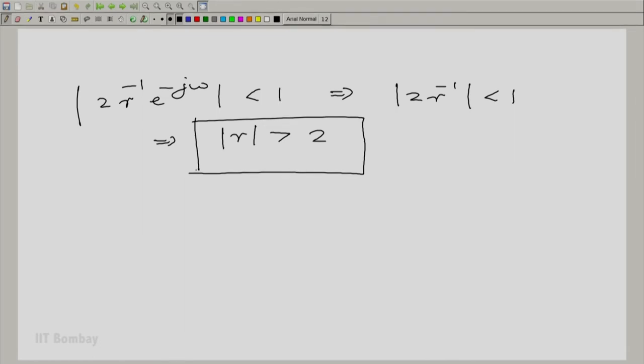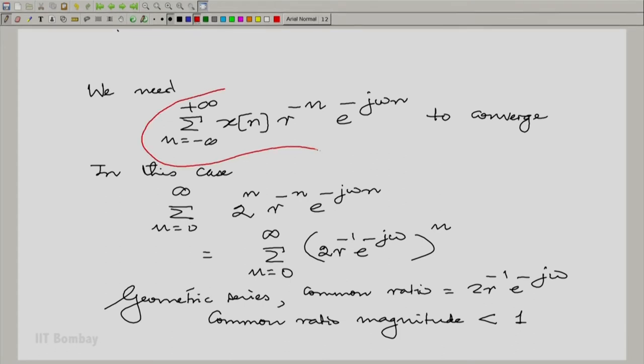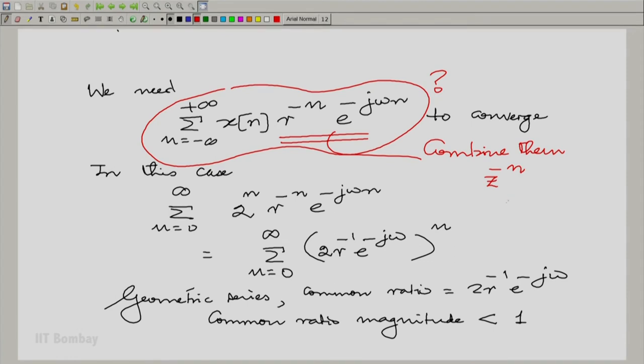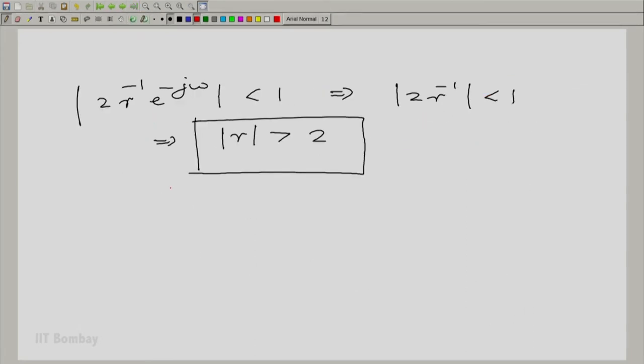This tells us the condition on r. But more generally, if we look back at what we did, let us go back to what we had done in terms of writing a summation. Let us combine these two factors together and write this as z raised to the power minus n, where z is r e raised to the power j omega. Remember, z is complex. In general, z is complex. And in fact, now we have an interpretation for r. r is essentially the magnitude of z. What are we really saying here? We are saying the magnitude of z must be greater than 2.